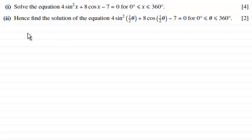And then in part 2, we've got to hence find the solution of the equation 4 sine squared half theta plus 8 cos a half theta minus 7 equals 0. Again, for theta greater than or equal to 0 degrees but less than or equal to 360 degrees, for 2 marks.